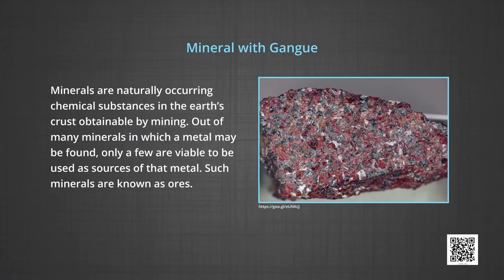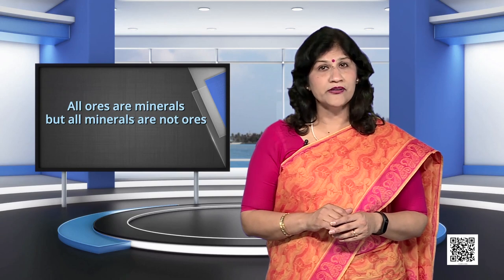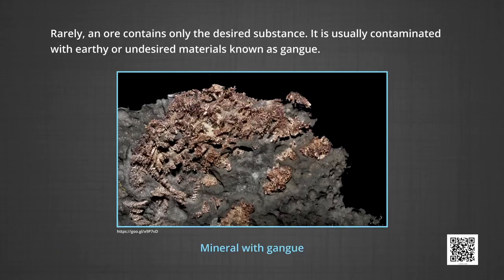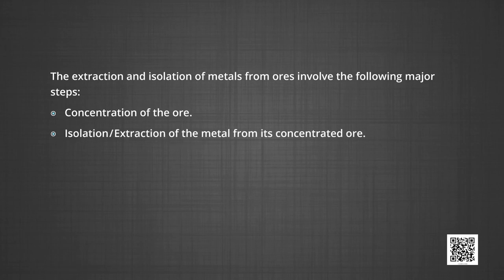For obtaining a particular metal, first we look for the minerals. A mineral is a naturally occurring chemical substance in the earth's crust, obtainable by mining. Out of the many minerals in which a metal may be found, only few are viable to be used as a source of that metal. Such minerals are known as ores. Thus, we say that all ores are minerals, but all minerals are not ores. Rarely an ore contains only the desired substance; it is usually contaminated with earthy or undesired materials known as gangue. The extraction and isolation of metals from ores involves concentration of the ore, isolation of the metal from its concentrated ore, and purification of the metal.